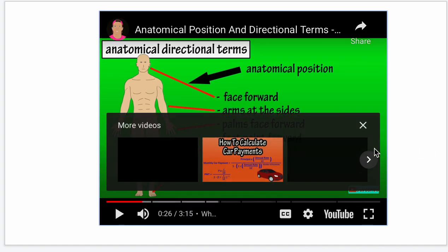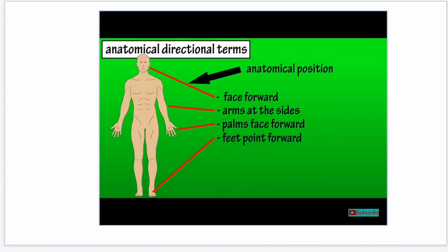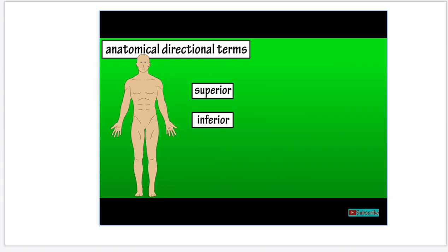Don't forget the correct anatomical position: face forward, arms at the side, palms facing forward, and feet pointing forward. Looking at the body in the exact same position, there will be less confusion when discussing anything related to anatomy. We're going to start with superior and inferior.